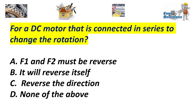For a DC motor that is connected in series, to change the rotation: A. F1 and F2 must be reversed. B. It will reverse itself. C. Reverse the direction. D. None of the above. Answer: A. F1 and F2 must be reversed.